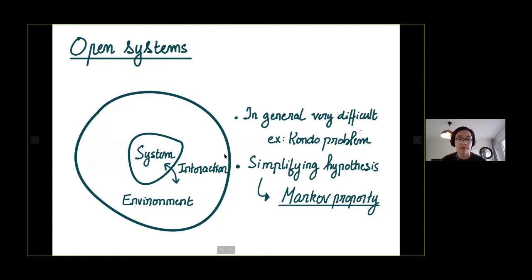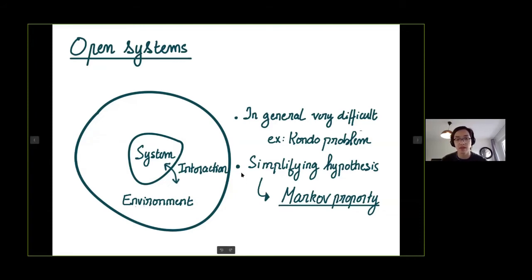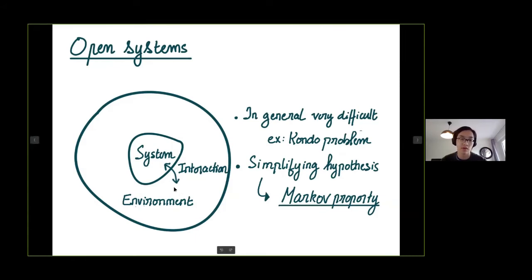The Markov property states that the properties of the system at a later time t-prime depend only on the state of the system at that given time t-prime, meaning that there are no memory effects in the system-environment interaction. Another way to state this is that the typical speed of relaxation of correlation functions in the environment is much faster than the typical timescales you are interested in for the dynamics of the system.